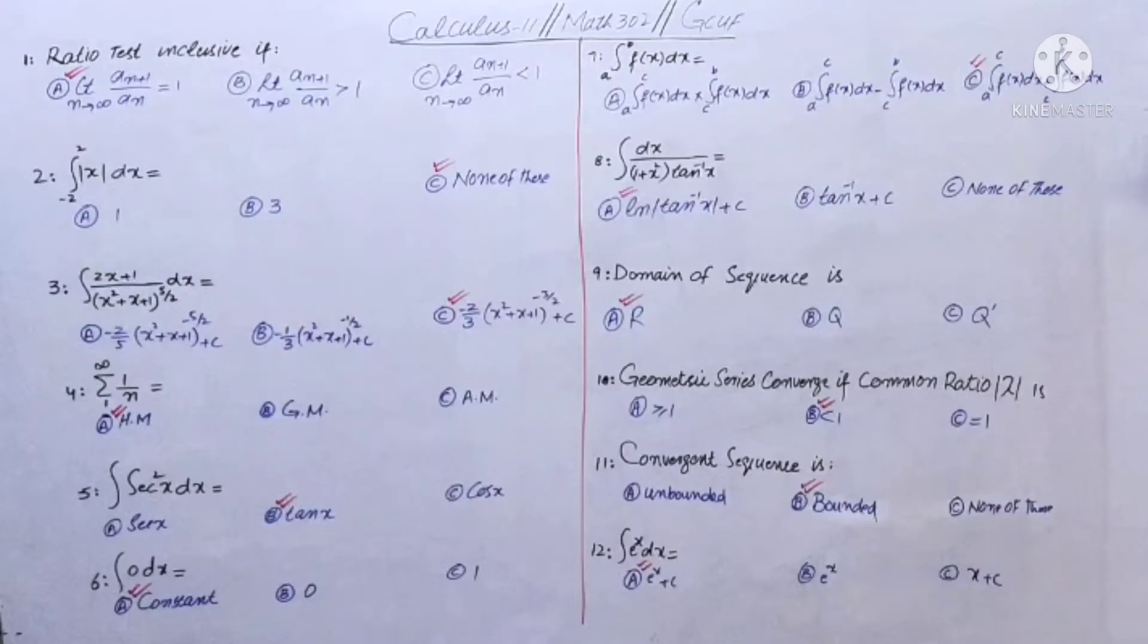MCQs number 2 is integral minus 2 to 2, x dx equal to. In this integral, if we apply the property where the function is odd, the integral will be zero.